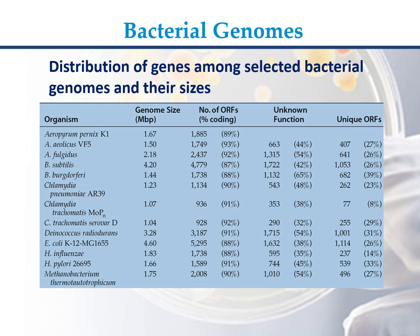E. coli K12 MG1655: genome size 4.60 Mb, 5295 ORFs (88%), unknown function 1632 (38%), unique ORFs 1114 (26%). H. influenzae: genome size 1.83 Mb, 1738 ORFs (88%), unknown function 744 (35%), unique ORFs 237 (14%). H. pylori 26695: genome size 1.66 Mb.